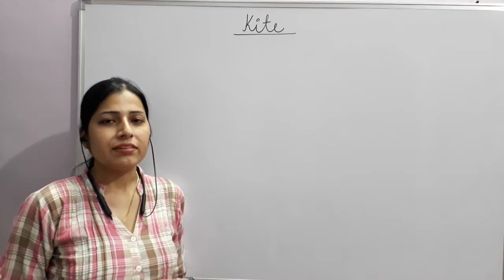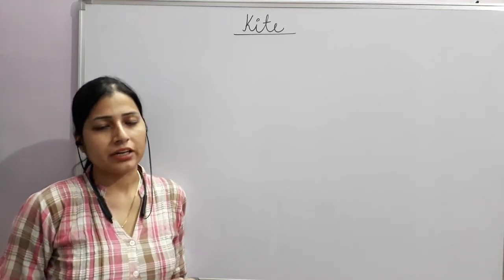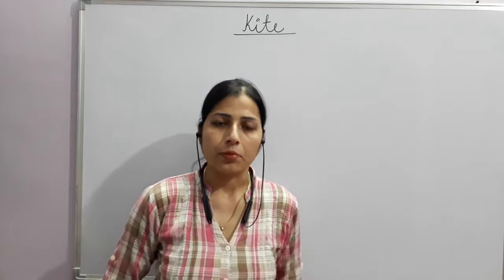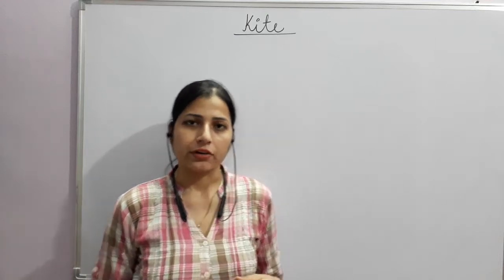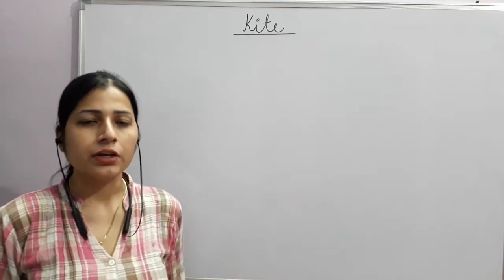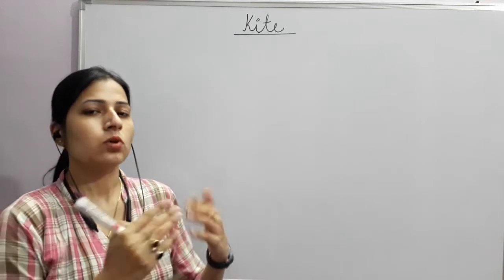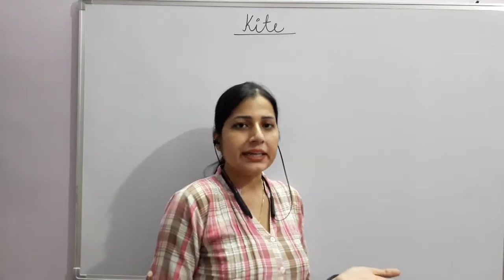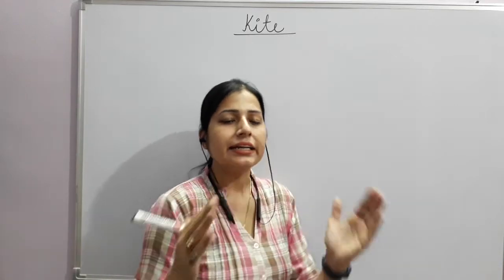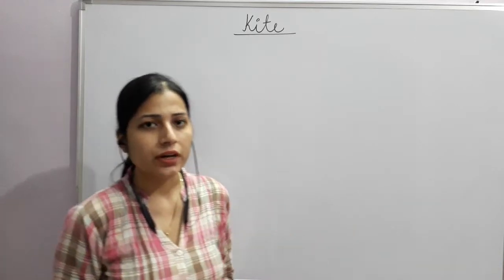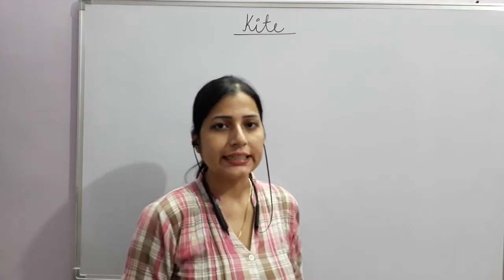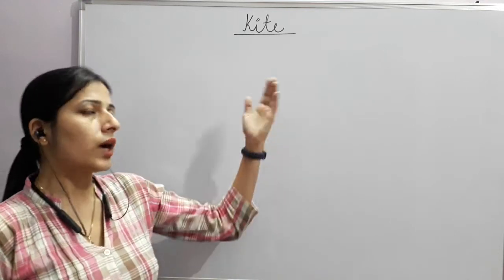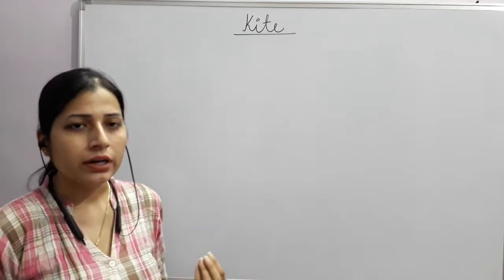Hello everyone. In this video we will study about the kite. Kite is also a type of quadrilateral. This figure has four sides and it is a closed figure. Any closed figure made of four sides is a quadrilateral. So kite is also a quadrilateral.